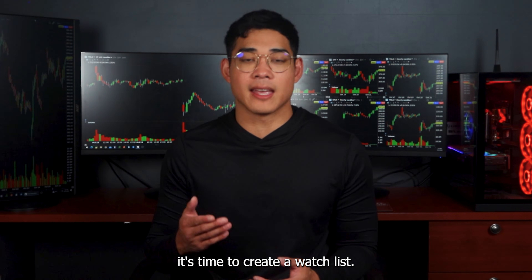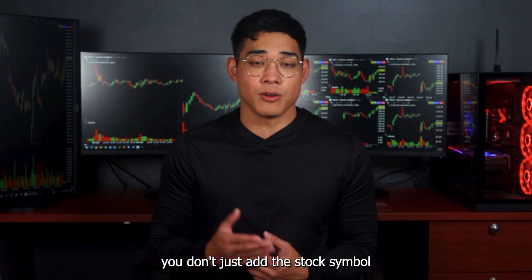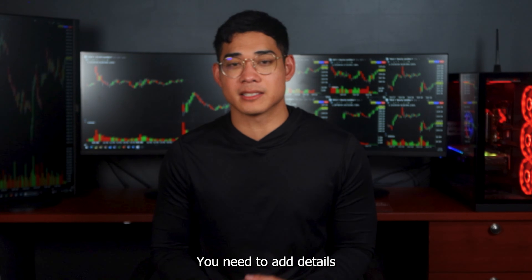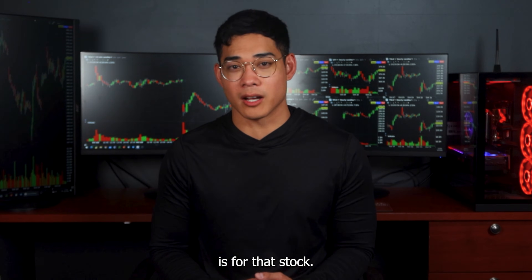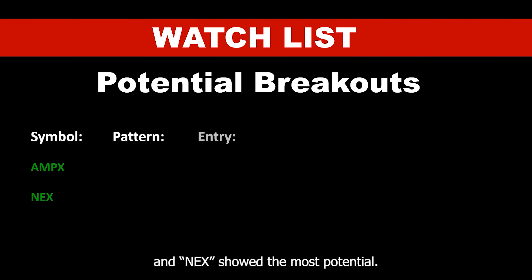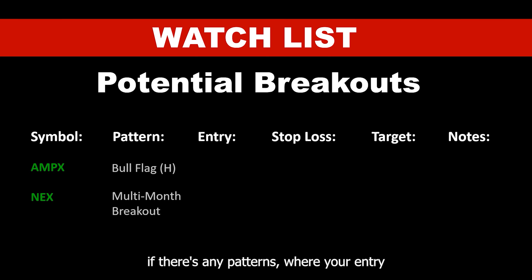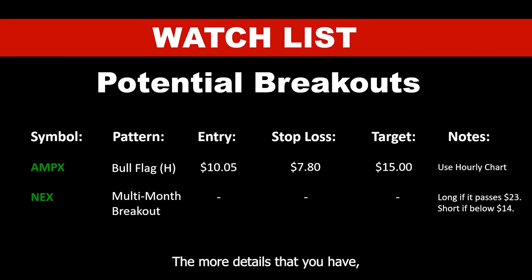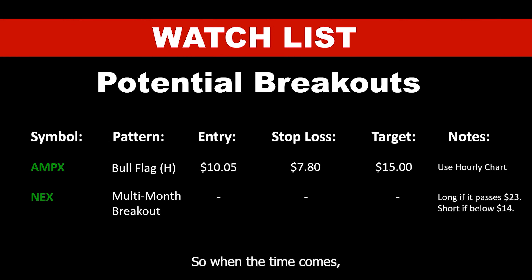Once you've narrowed down your selection, it's time to create a watchlist. In your watchlist, don't just add the stock symbol because you might forget what to do with it — you need to add details about what your trading plan is for that stock. For example, AMPX and NEX showed the most potential. Write down any patterns, where your entry is, where your stop loss is, and what your target is. You can also add notes. The more details you have the better — this will help you stay organized and prepared so when the time comes, you'll know how to execute the trade.